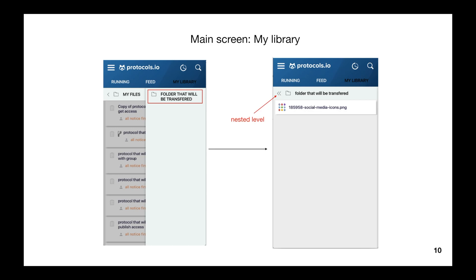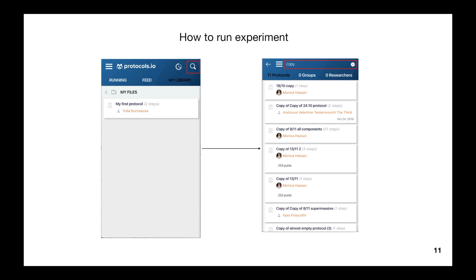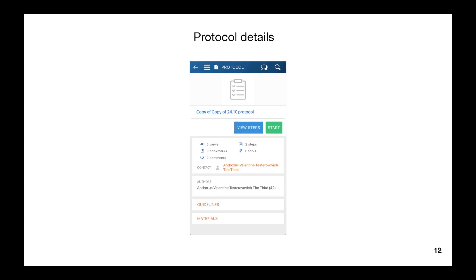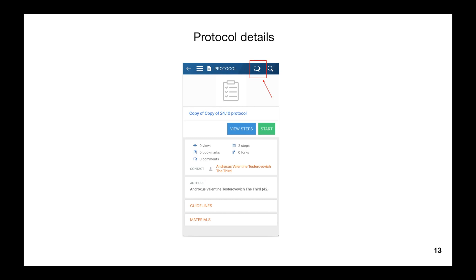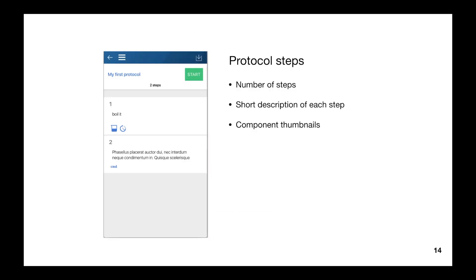Our main question for today is how to run and save experiments. Let's imagine you are a new user and you don't have any bookmarked protocols. You can search for what you're interested in by tapping the magnifier icon at the top right. Tap what you want to view and you will be taken to the protocol detail screen. It shows summary information, number of steps, contact information. You can also view protocol-level comments. The View Steps button opens a full list of steps with brief descriptions, including protocol title, number of steps, short description of each step, and component thumbnails.